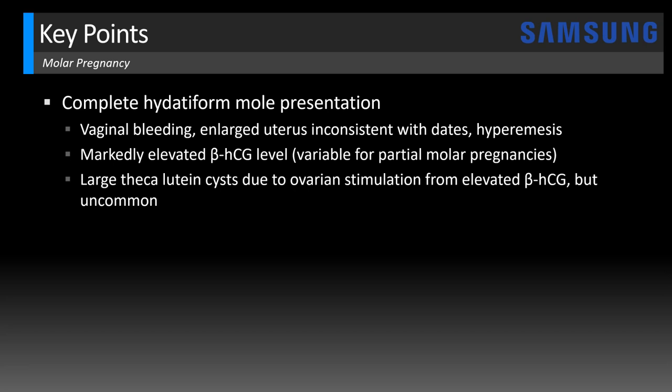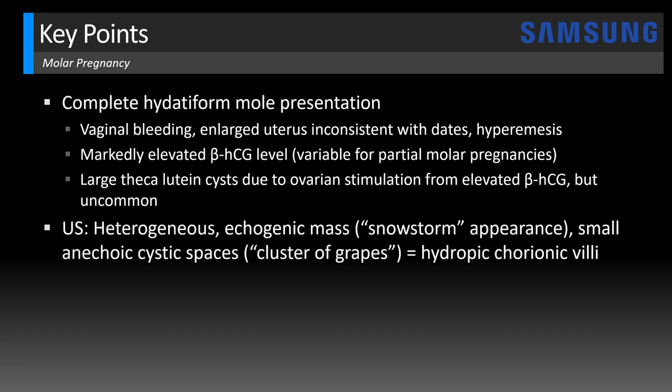You might also see large functional thecalutein cysts within the ovaries due to ovarian hyperstimulation from the markedly elevated beta-HCG level in a complete molar pregnancy. Those will be large cysts arranged in a spokewheel pattern throughout the ovary, but these are actually uncommon — we only see them in less than 20% of complete moles. This patient actually had normal ovaries. On ultrasound, we're looking for a heterogeneous echogenic mass expanding the endometrial cavity, giving almost a snowstorm appearance, within which you'll see small anechoic cystic spaces, as we saw in this case, giving a cluster of grapes appearance.